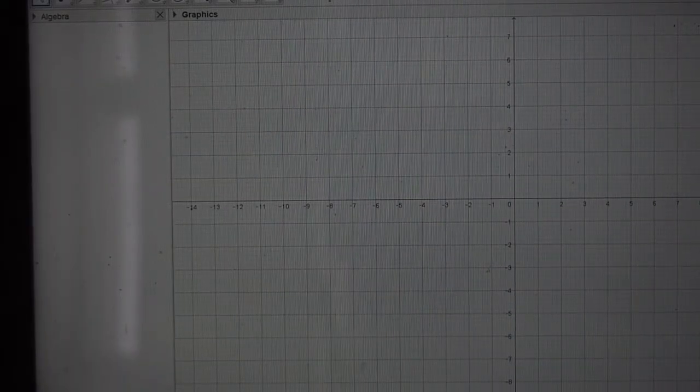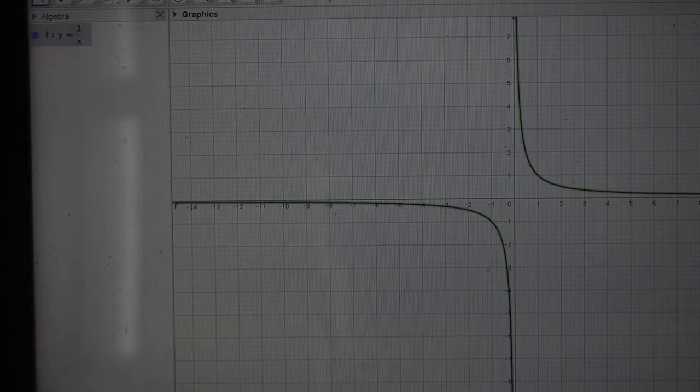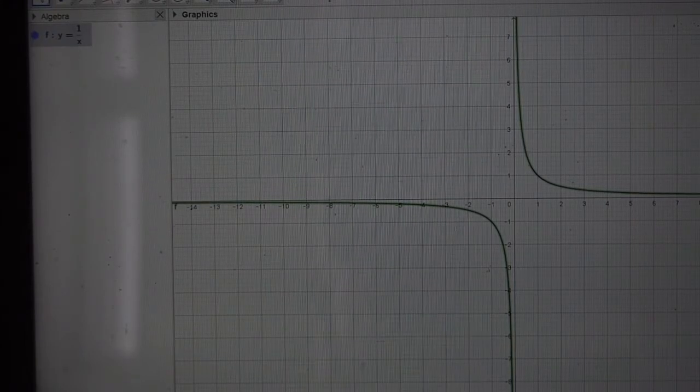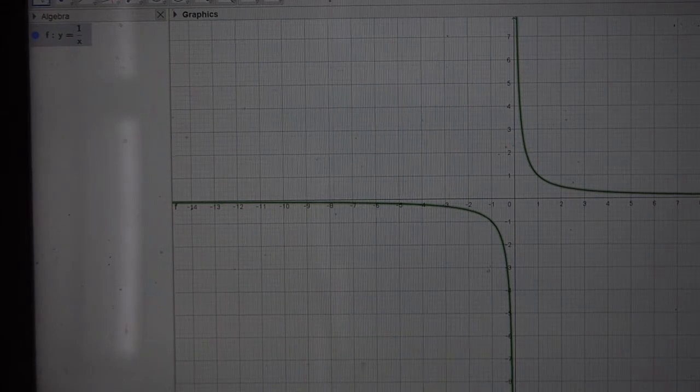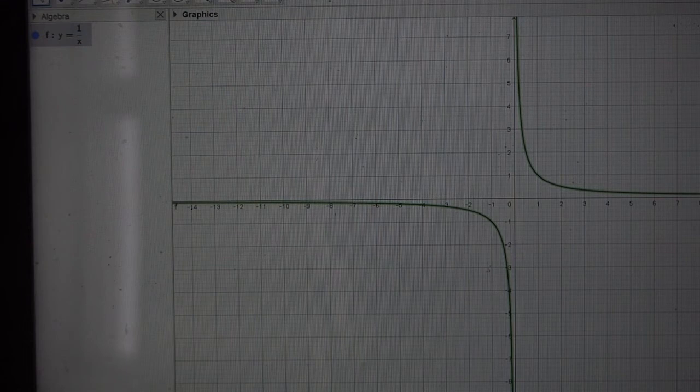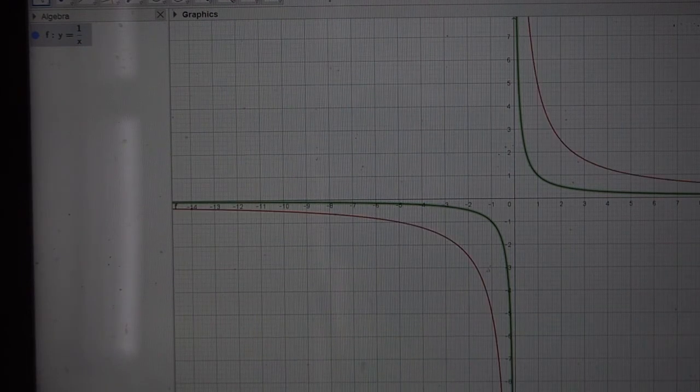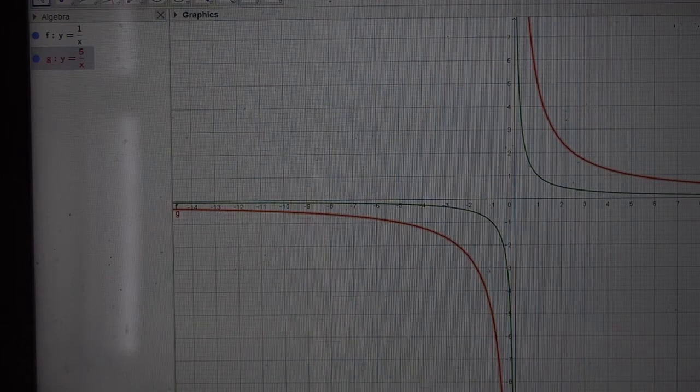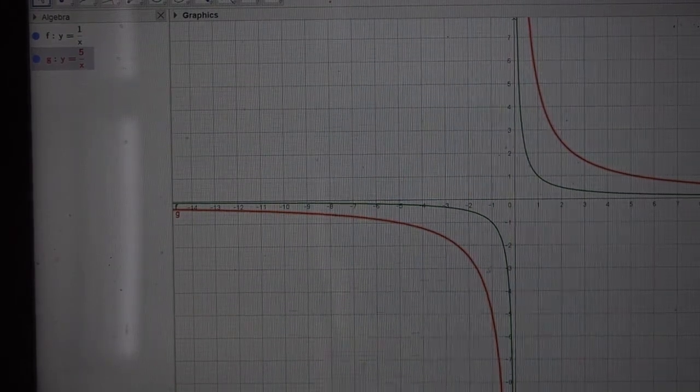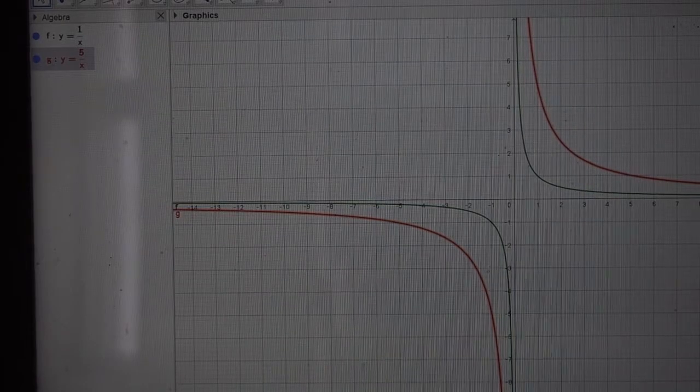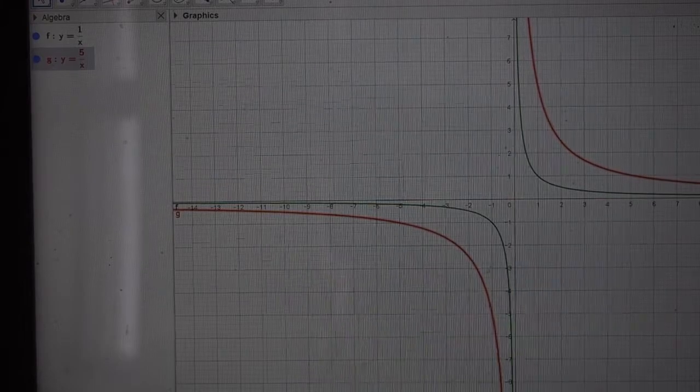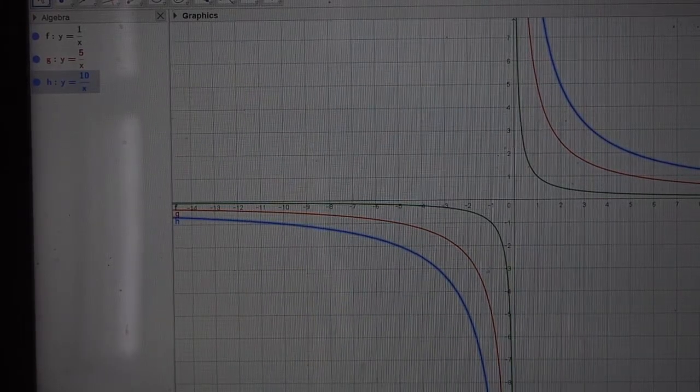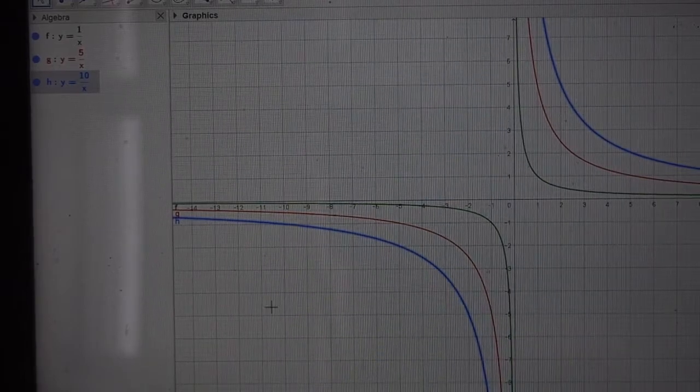I want to show you what happens when we're graphing a hyperbola with different values of k. If I have y equals 1 over x, that's our basic hyperbola. Then if I have larger values of k, like y equals 5 over x, you can see that the curve gets a bit flatter. It maintains the same shape, but the larger the value of k, the flatter the graph becomes. With y equals 10 over x, it's the same shape, just getting flatter as the value of k gets bigger.